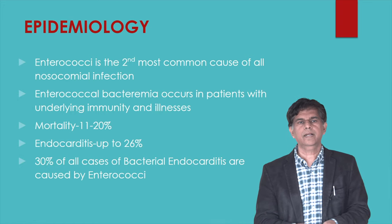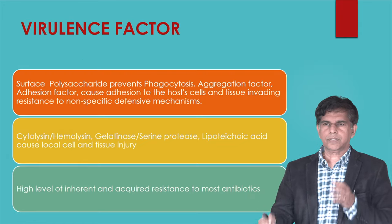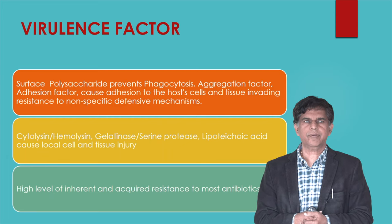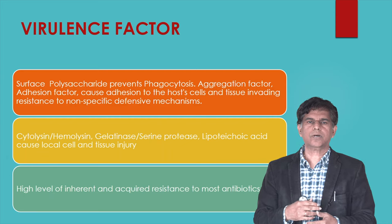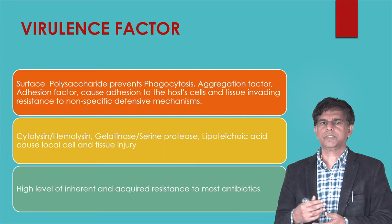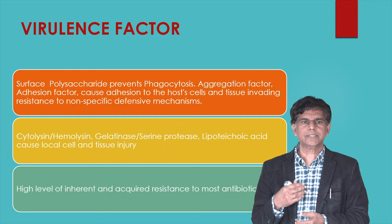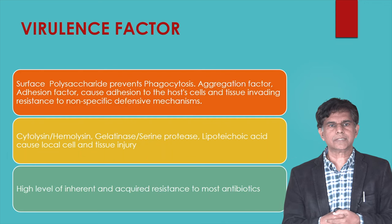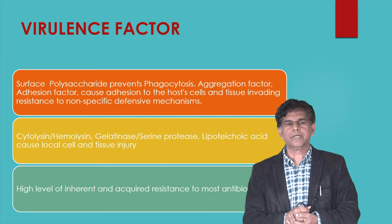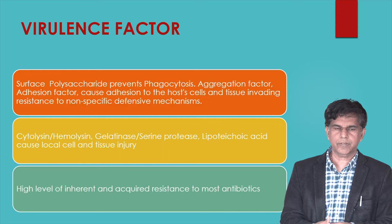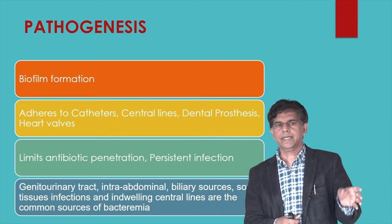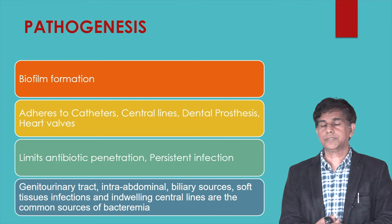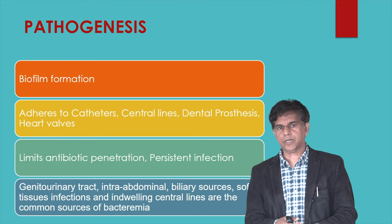Enterococci account for 30% of all bacterial endocarditis. Looking at virulence factors: surface polysaccharides prevent phagocytosis; aggregation factors and adhesion factors cause adhesion to host cells; and there is resistance to non-specific defense mechanisms. Cytolysin, hemolysin, gelatinase, serine proteinase, and lipoteichoic acid cause local cell and tissue injury. There is a high level of inherent and acquired resistance to most antibiotics, and biofilm formation allows adherence to catheters, central lines, dental prostheses, and heart valves.